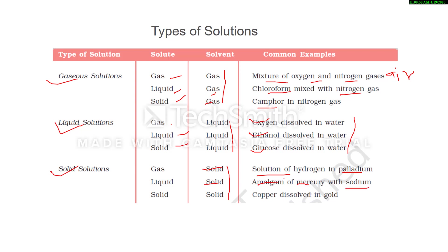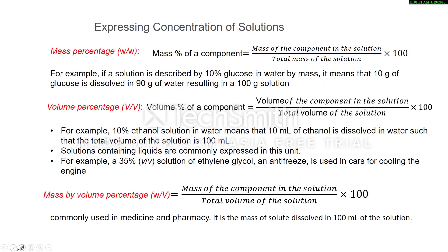For solid solutions: gas in solid — for example, solution of hydrogen in palladium; liquid in solid — amalgam of mercury with sodium (any alloy having mercury as one of the metals is called an amalgam); solid in solid — all alloys are categorized in this type, for example copper, gold, brass, and bronze.